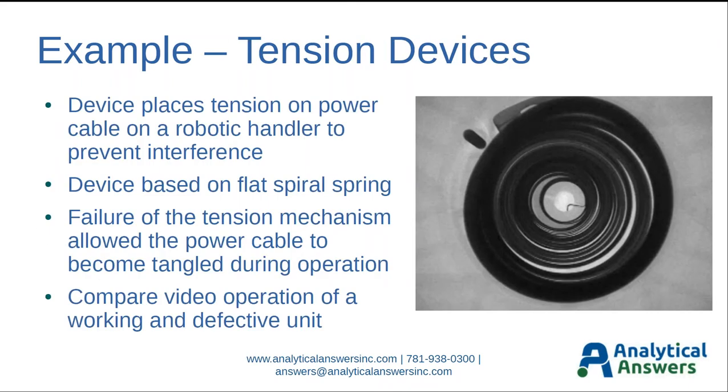Let's go on to something a little more serious. Here we have a tension device where you have a flat spiral spring. This device basically has a hub around it and as the hub rotates you increase the tension on the spring. By having a cable on that hub it's designed to place tension on a power cable on a robotic handler to keep the cable out of the way of the mechanism so it doesn't get tangled. The failure of the tension mechanism allowed the power cable to become tangled and that was very bad for both the piece of equipment and anyone that was nearby.